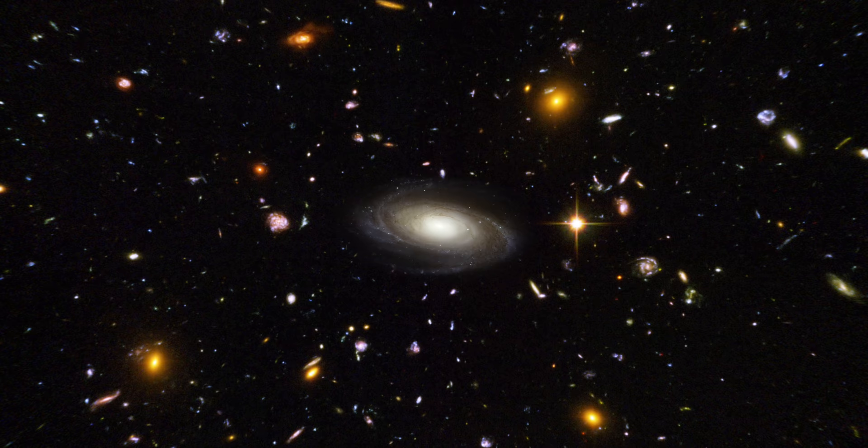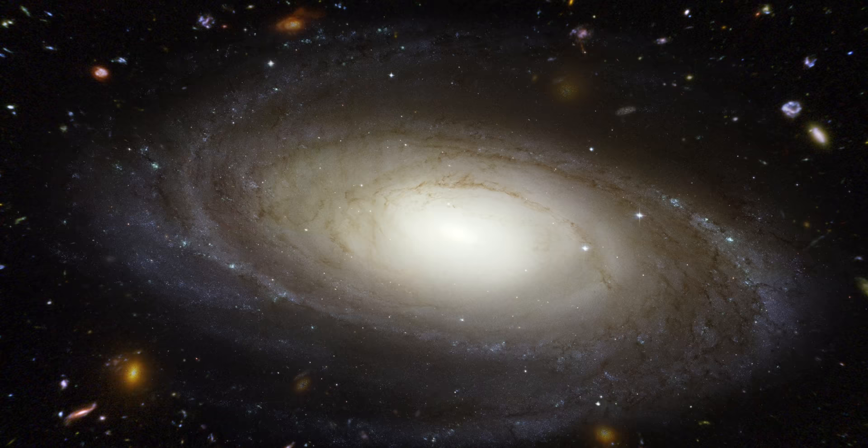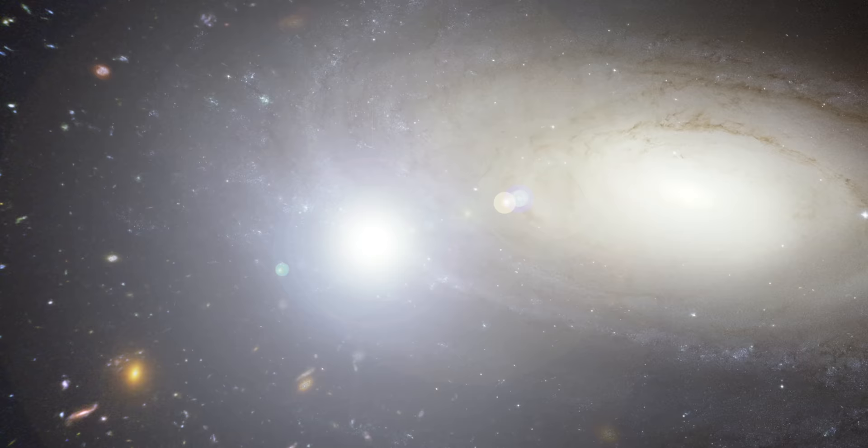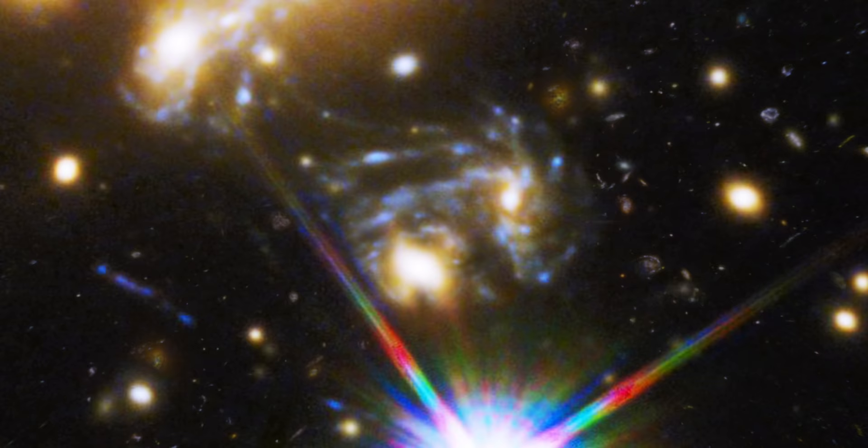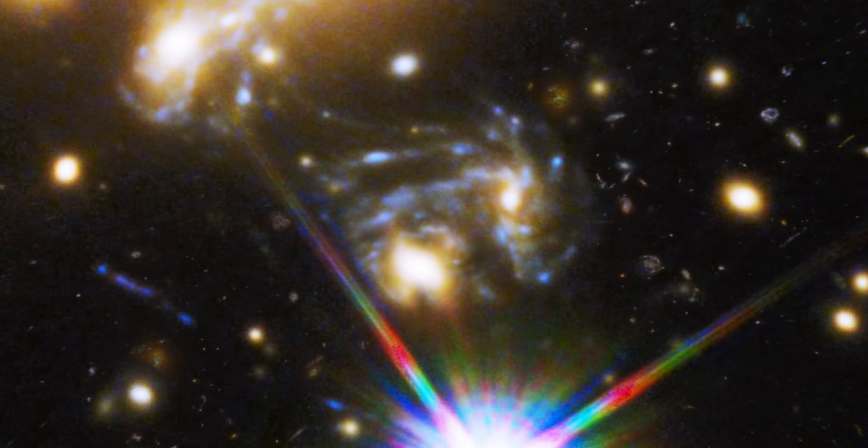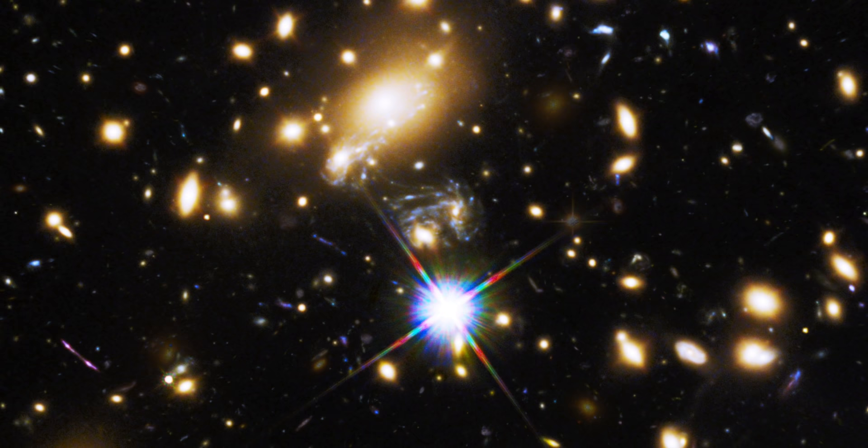So what happened with our supernova is 9.3 billion years ago, a dying star in a galaxy far, far away went out with a bang, as a supernova. The explosion sent out a blast of light in all directions. About five billion years ago, before the earth even existed, that light encountered a very massive object that warped space-time. It was a cluster of galaxies called MACS J1149.5-2223.